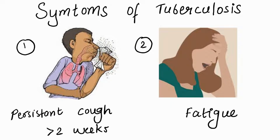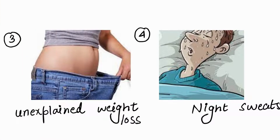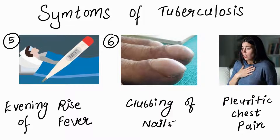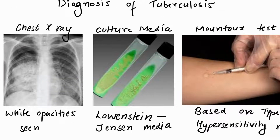Now let's talk about symptoms, which can be quite subtle and often mimic other illnesses. You have to look out for a persistent cough lasting more than two weeks, fatigue, unexplained weight loss, night sweats, fever, clubbed fingernails, and sometimes chest pain as well.